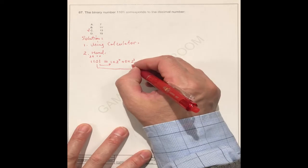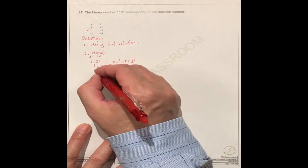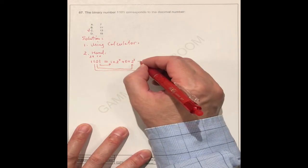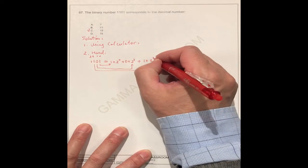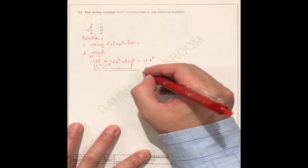So this is this one. How about this one? This is plus 1 times 2 to the power 2. So this is this.